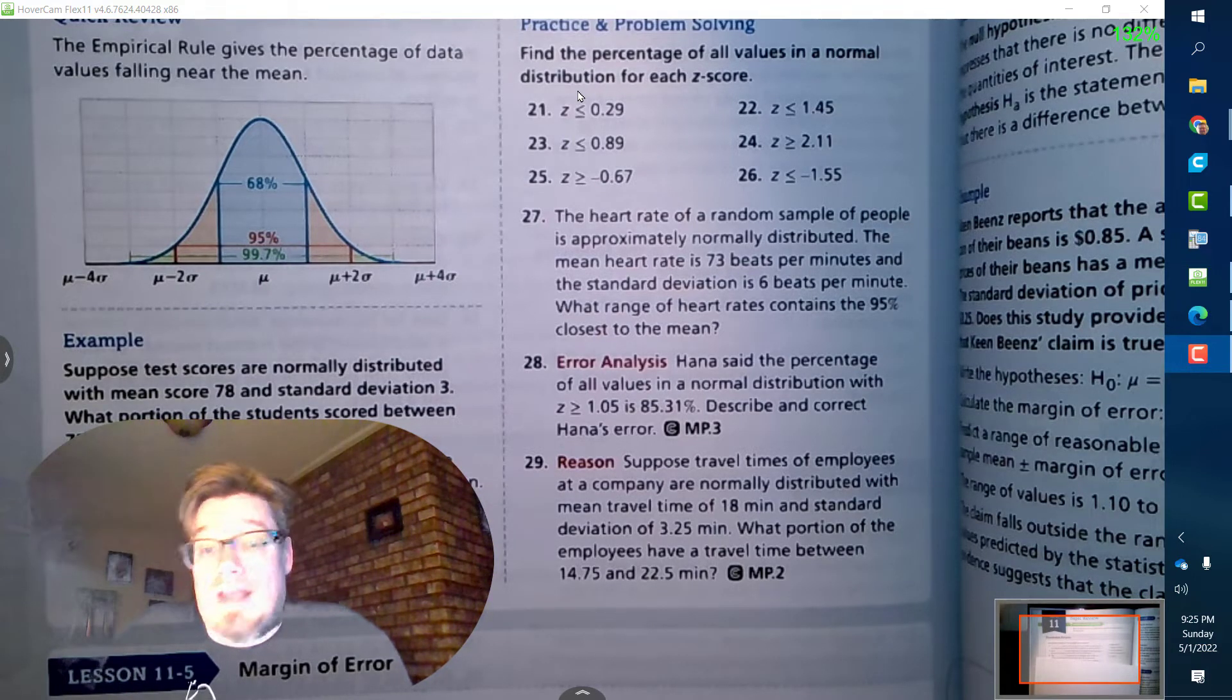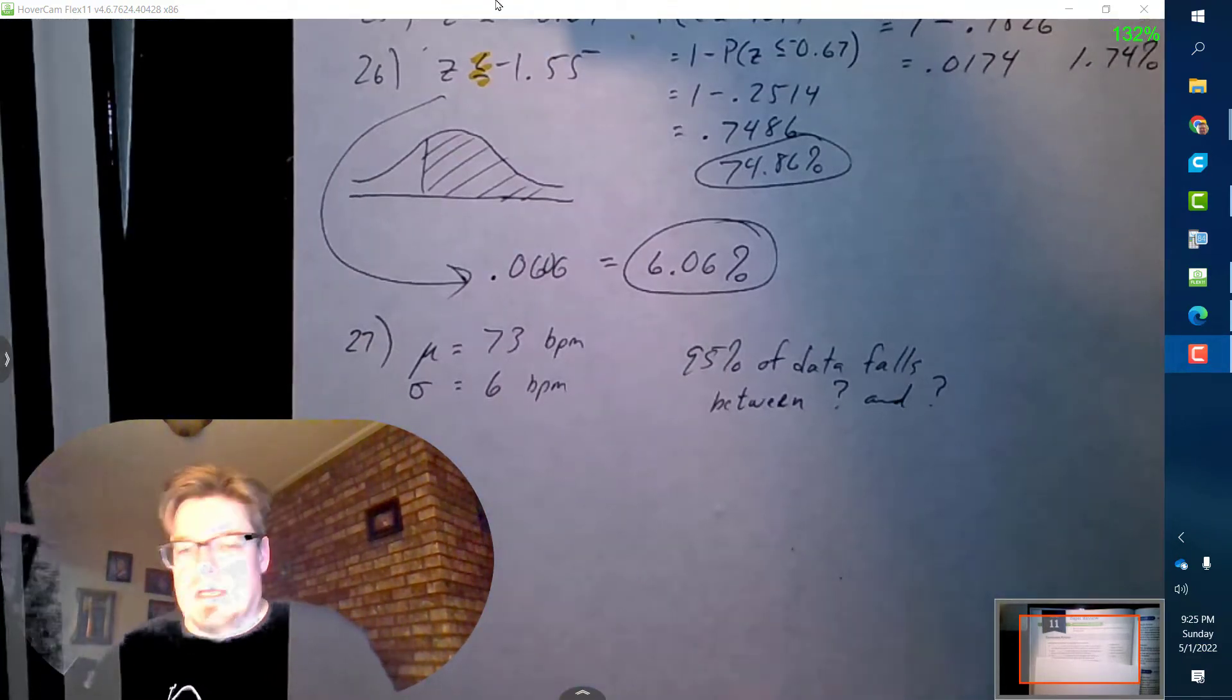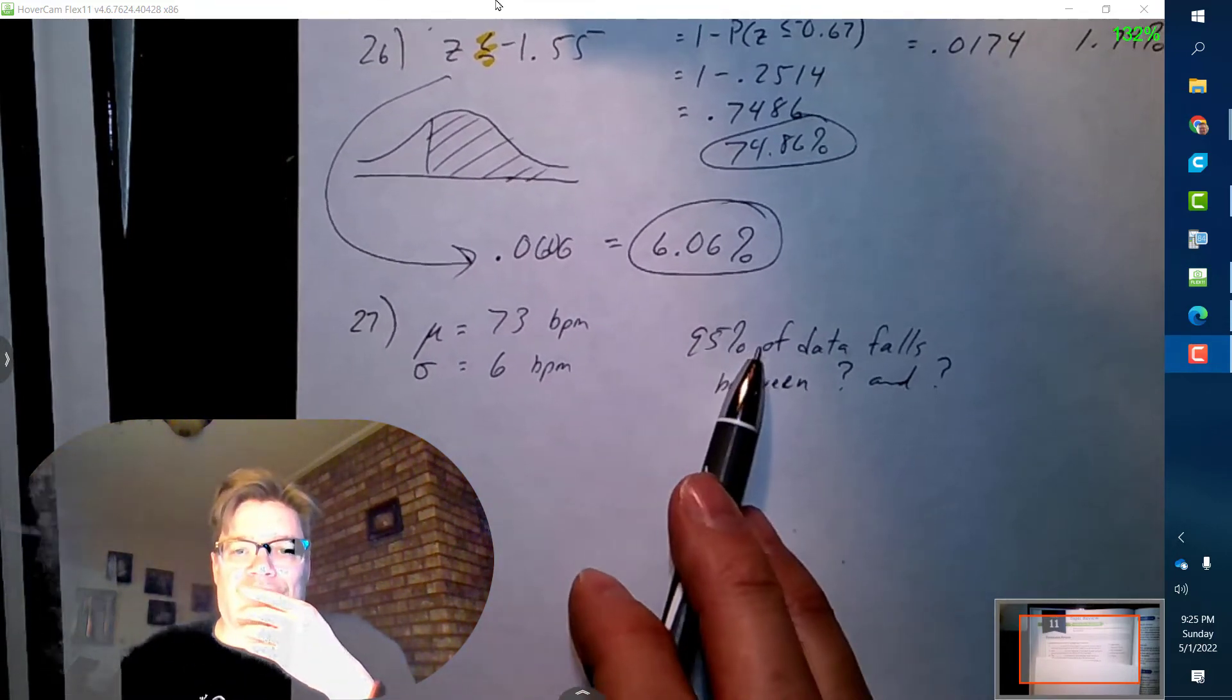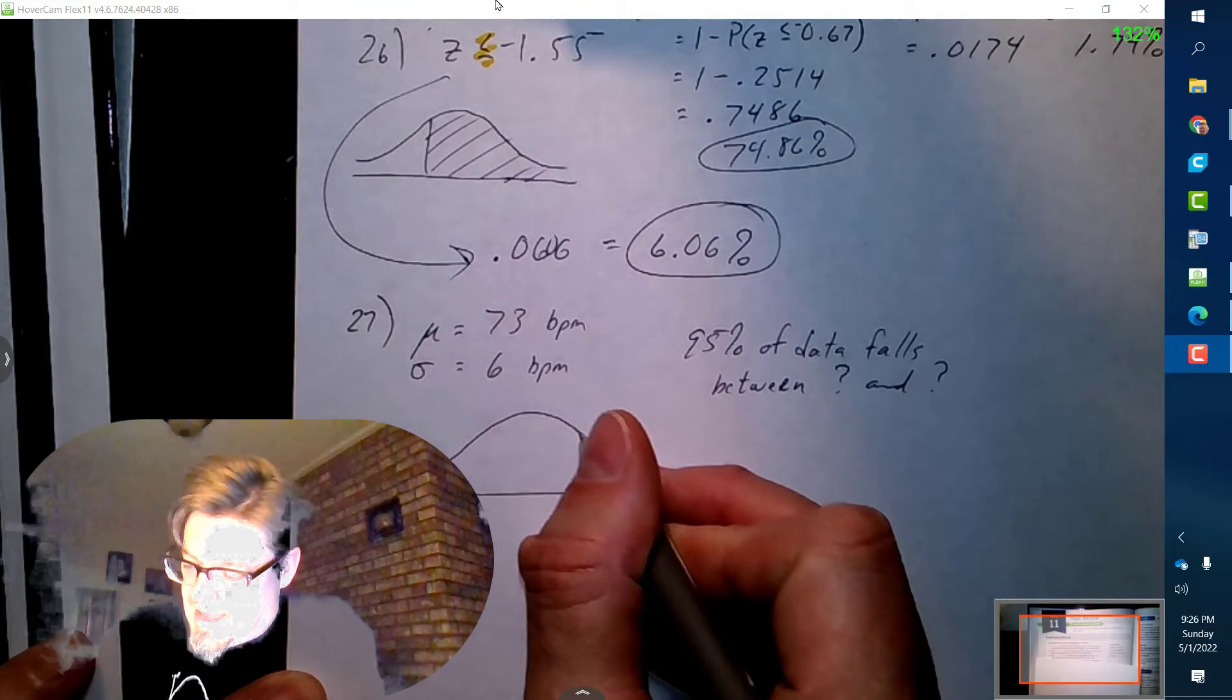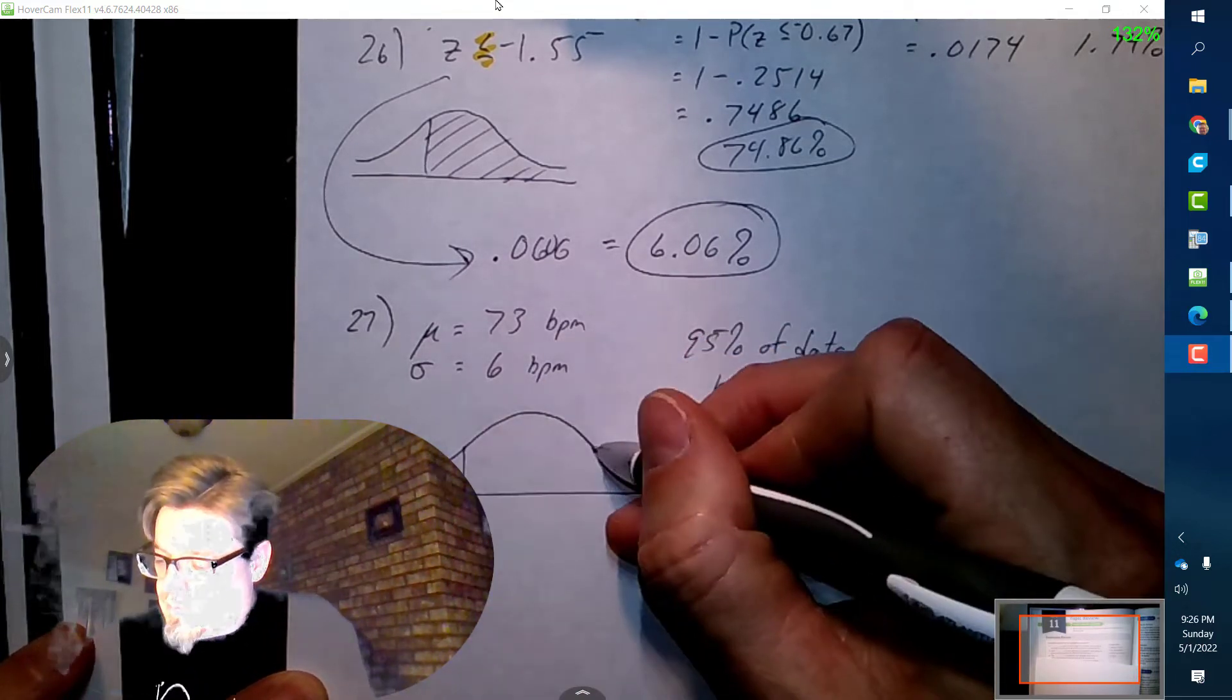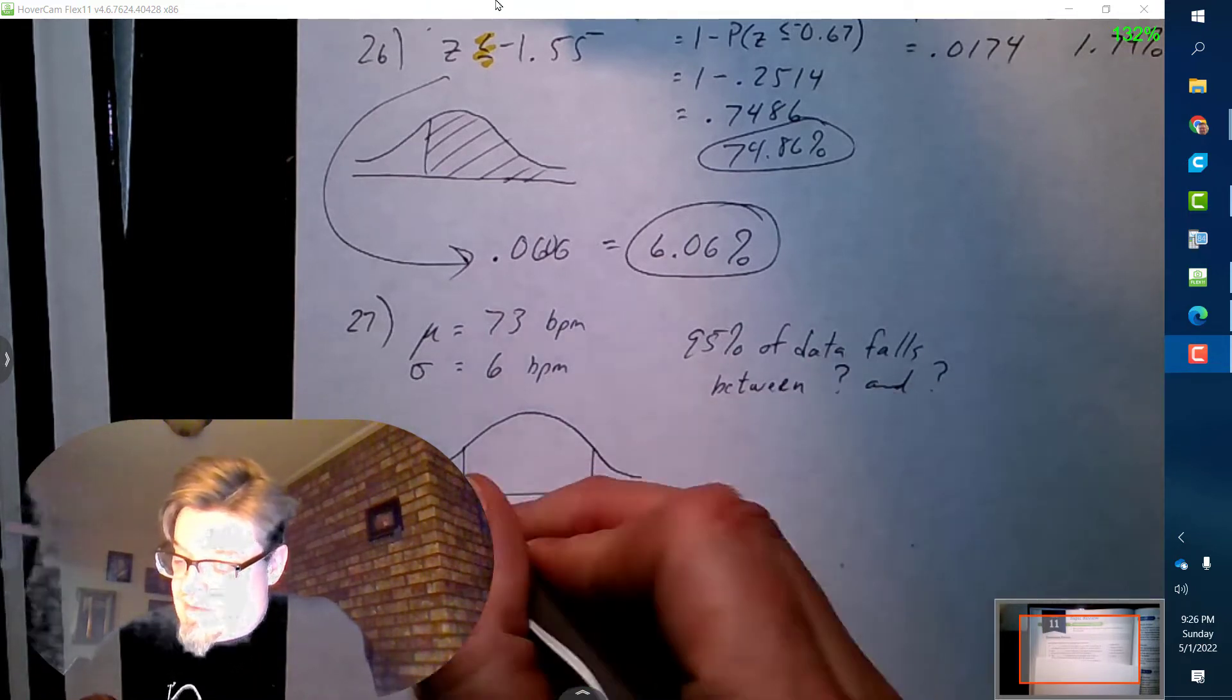Okay, so what this means is that I need to figure out where 95 percent of data falls. 95 percent is a key percentage, and they said that percentage has to be around the mean. So this means that I'm exactly two standard deviations away from the mean.